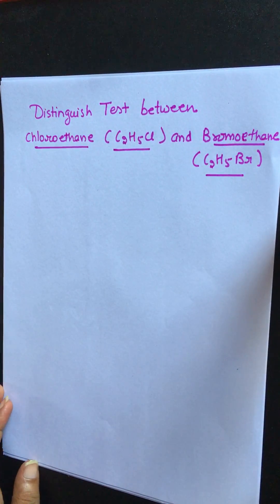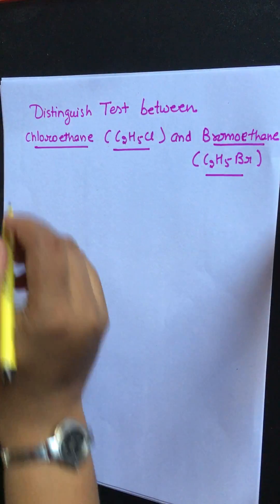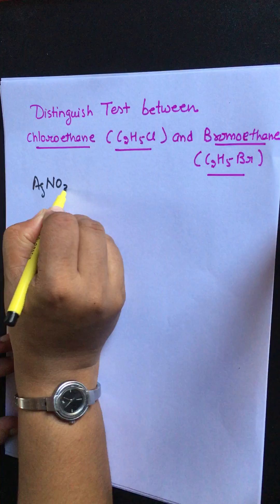Then in presence of silver nitrate they will give their specified precipitate of AgCl white color and AgBr of pale yellow color. So let's see what this test is. AgNO3 test.